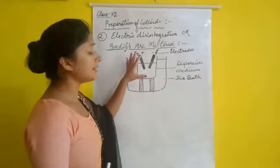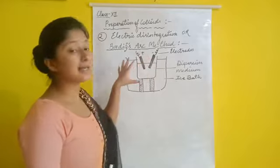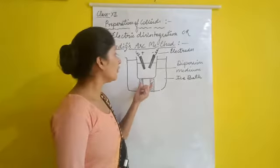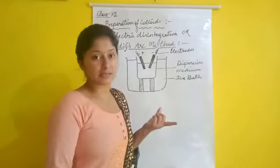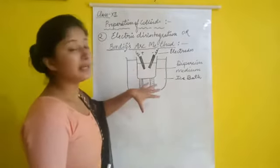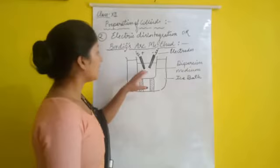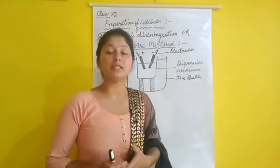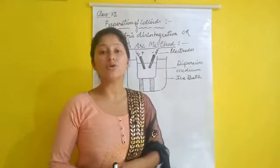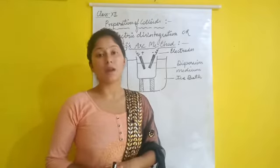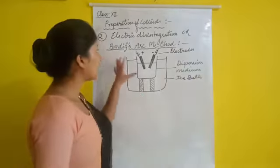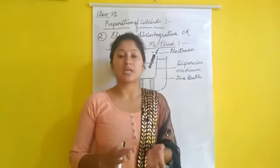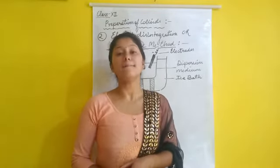An intense heat is produced by the electric spark, which vaporizes the metal. The metal vapor then condenses into small particles of colloidal size. This is the Bredig arc method for preparing colloids of metals such as gold, silver, and platinum.